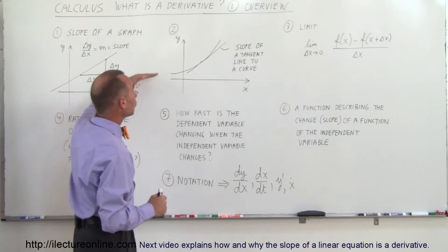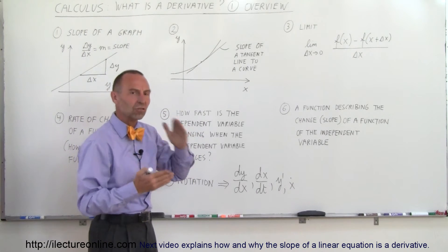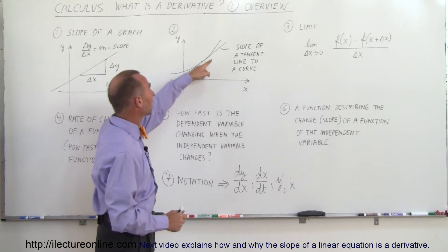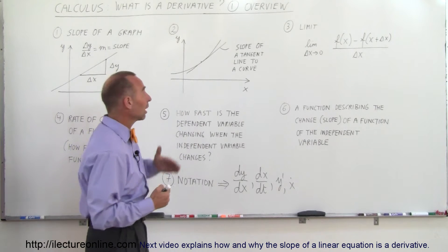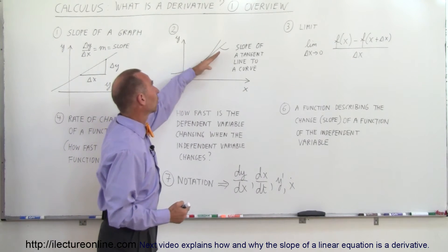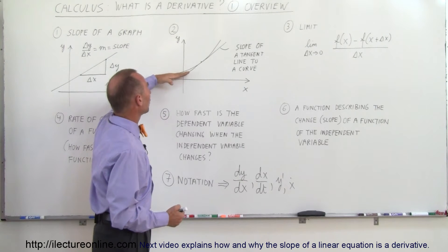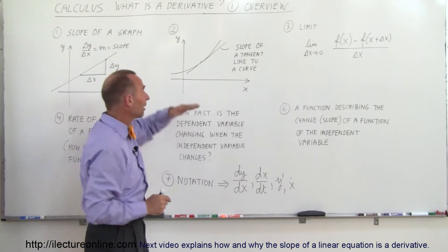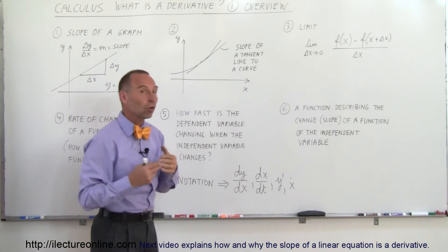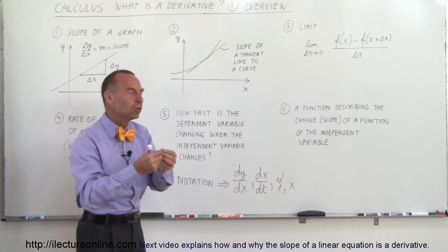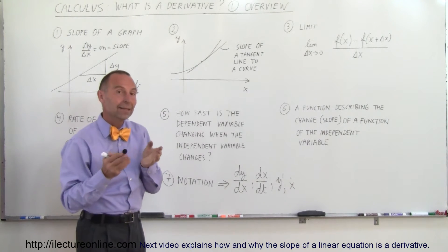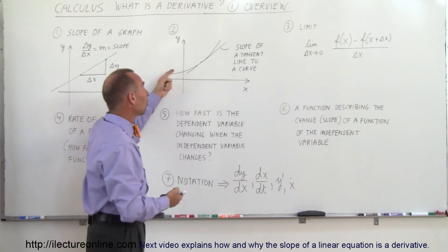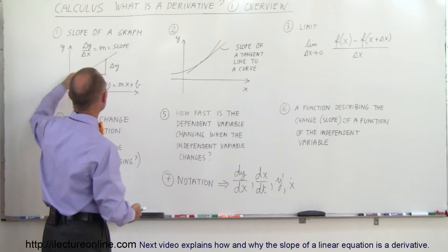Another way you can look at it is when you have a curve instead of a straight line — a function represented by a curve on an xy graph. The slope of a tangent line is also the derivative of that function. Notice that if I take the slope at one point it will look like that, but if I take the slope at another point the slope will be different. In each case that slope is the derivative of that function, but since the slope changes, the derivative also changes — it has a different value at different points along that curve. When you have a straight line the slope is the same everywhere along the function.